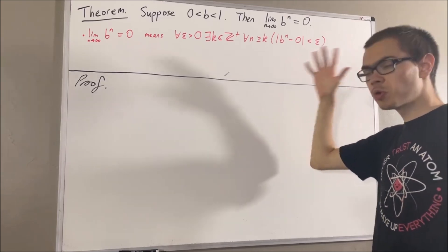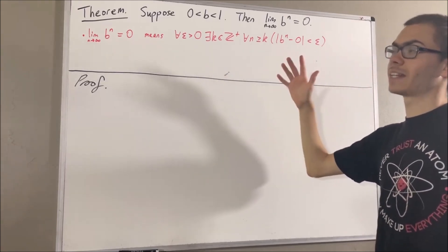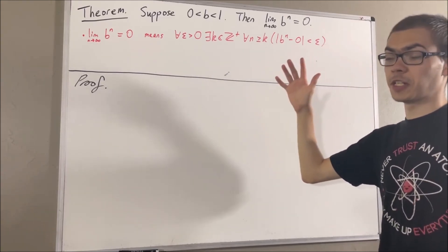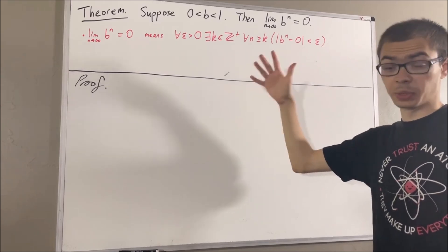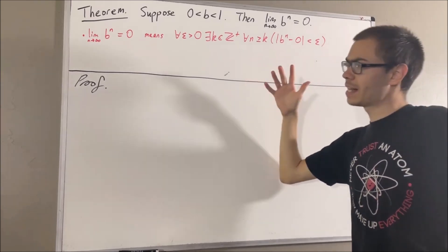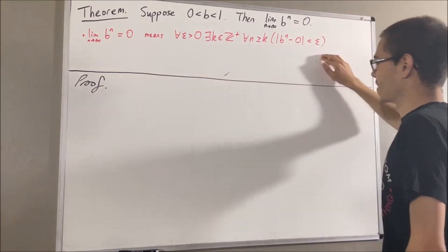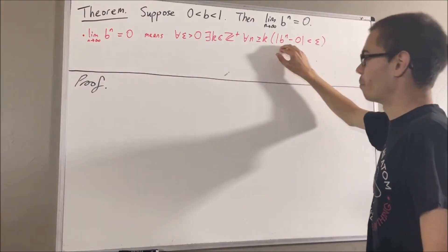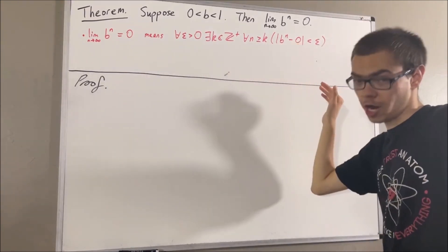Now, in proving this theorem, we are going to use the fact that the limit as n approaches infinity of 1 over n is equal to 0. And that means precisely the same thing as this — it's just instead of b to the power of n, we have 1 over n.